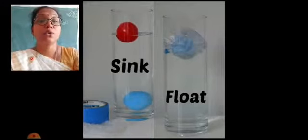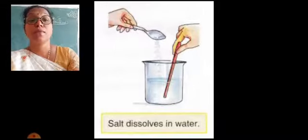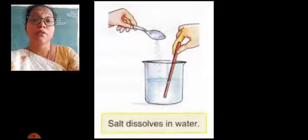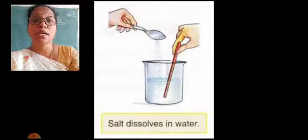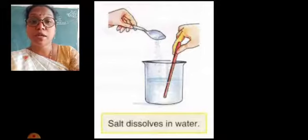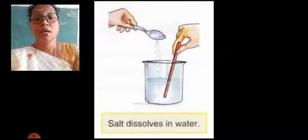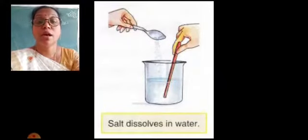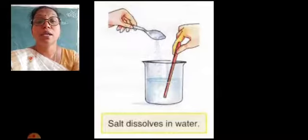Another property by which materials are classified is solubility. For example, salt dissolves in water. The material which dissolves is called the solute, and the liquid in which the solute dissolves is called the solvent. When the solute and solvent are mixed, we call it a solution. Salt dissolves in water to give a salt solution. Similarly, soap powder and sugar can also be dissolved in water. There are many materials that dissolve in water, and that property is called solubility.